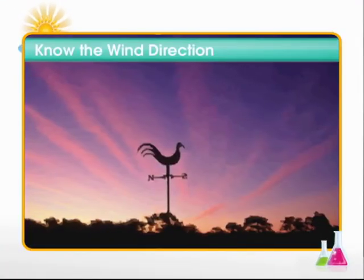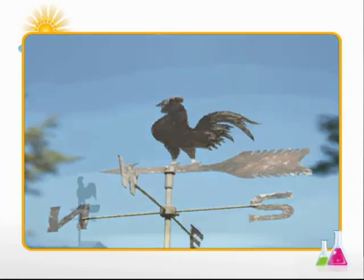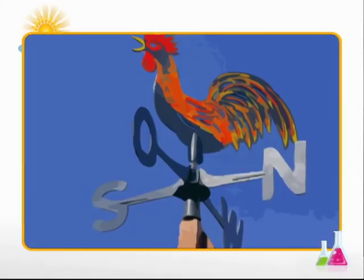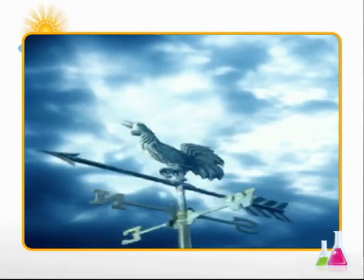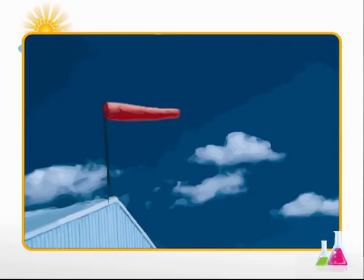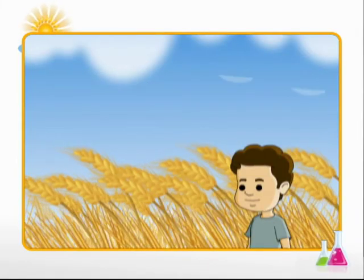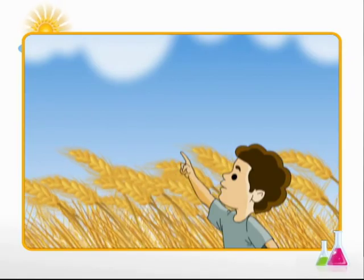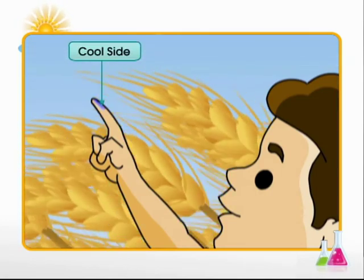Let's determine the wind direction. See here. Do you recognize it? Well, it is a weathercock. The weathercock or wind vane indicates wind current direction. It always points in the direction of the wind. Similarly, windsock flies in the direction of wind. There is still a simpler way by which we can know which way wind is coming from. Lick your index finger and hold it up in the air. The side of the finger which feels cool is the direction from which wind is blowing.